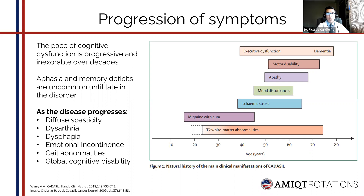Cognitive impairment is the second most frequent manifestation, with the early signs in most cases being impairment in executive function and processing speed. Cognitive decline becomes more extensive with aging, progresses through time, and worsens with recurrent stroke. In the years preceding death, dementia is invariably associated with motor impairment, gait disturbances, and later pseudobulbar palsy.